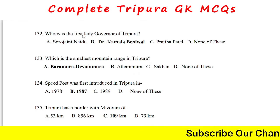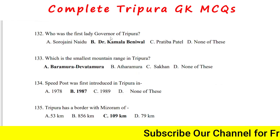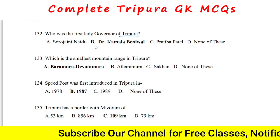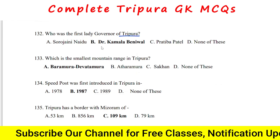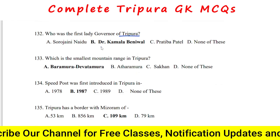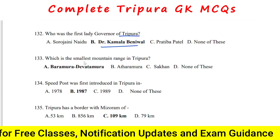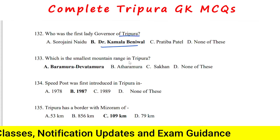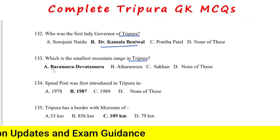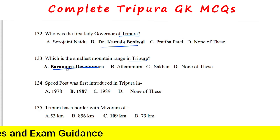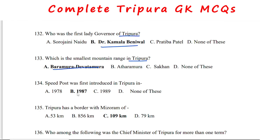The first lady Governor of Tripura was Dr. Kamala Beniwal. The smallest mountain range in Tripura is Baramura–Debtamura. Speed post was first introduced in Tripura in 1987. Tripura has a border with Mizoram of 109 km.